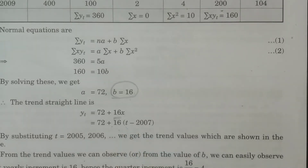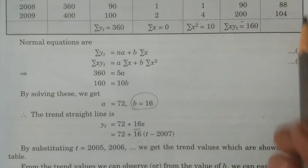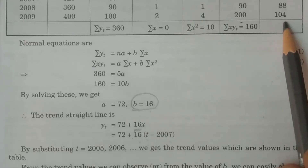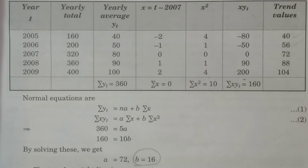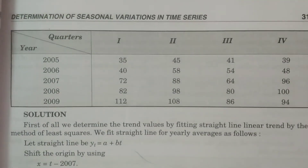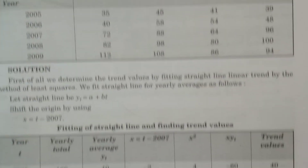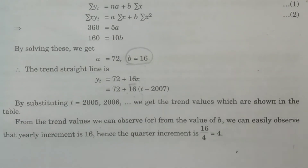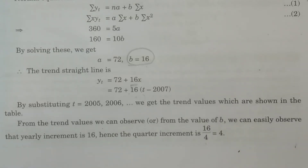From one year to another, the increment is 16. Now after calculating the yearly trend values, we have to calculate quarterly trend values — that is seasonal trend values. Since the data is quarterly, you have to obtain it for each season. Because 16 is the yearly increment, for the quarterly increment you divide by 4, giving you 4 as the quarter increment.